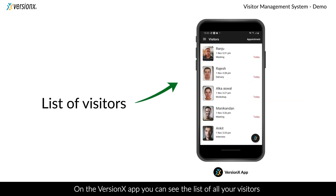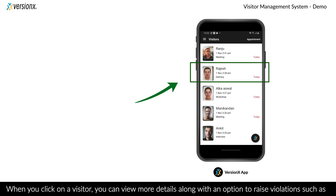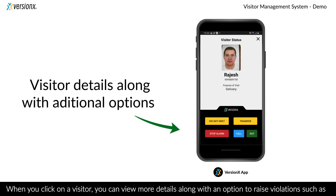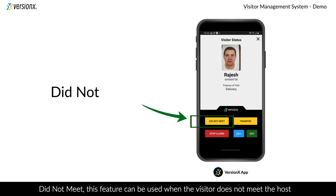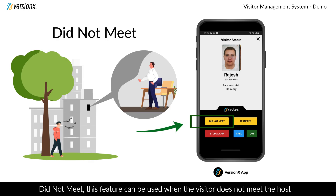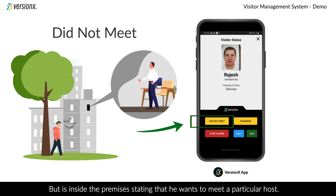On the versionX app you can see a list of all your visitors. When you click on a visitor you can view more details along with an option to raise violations such as 'did not meet'. This feature can be used when a visitor does not meet the host but is inside the premises, stating that he wants to meet a particular host.